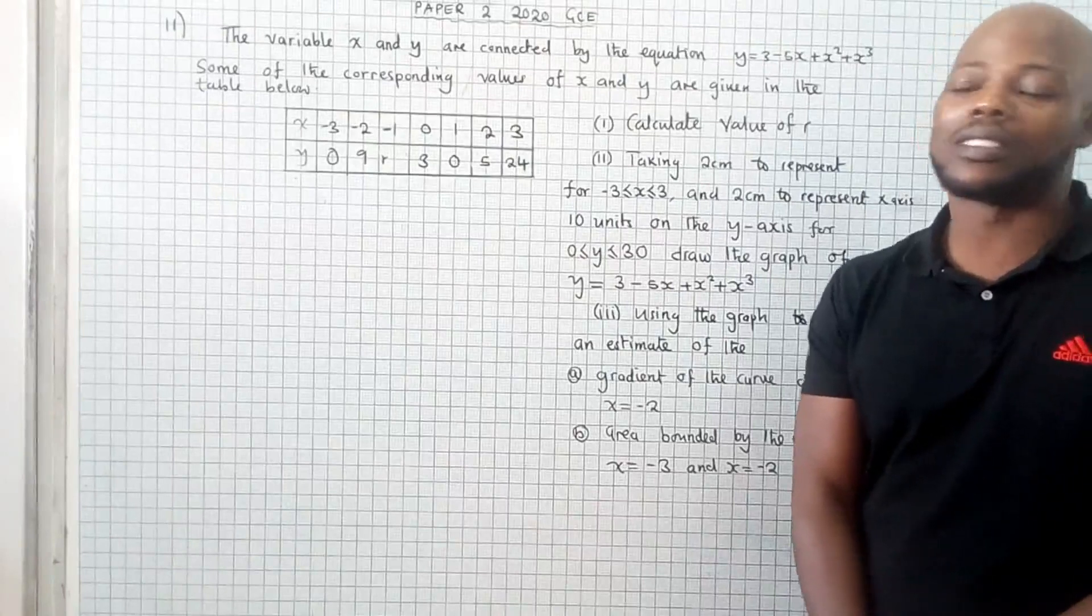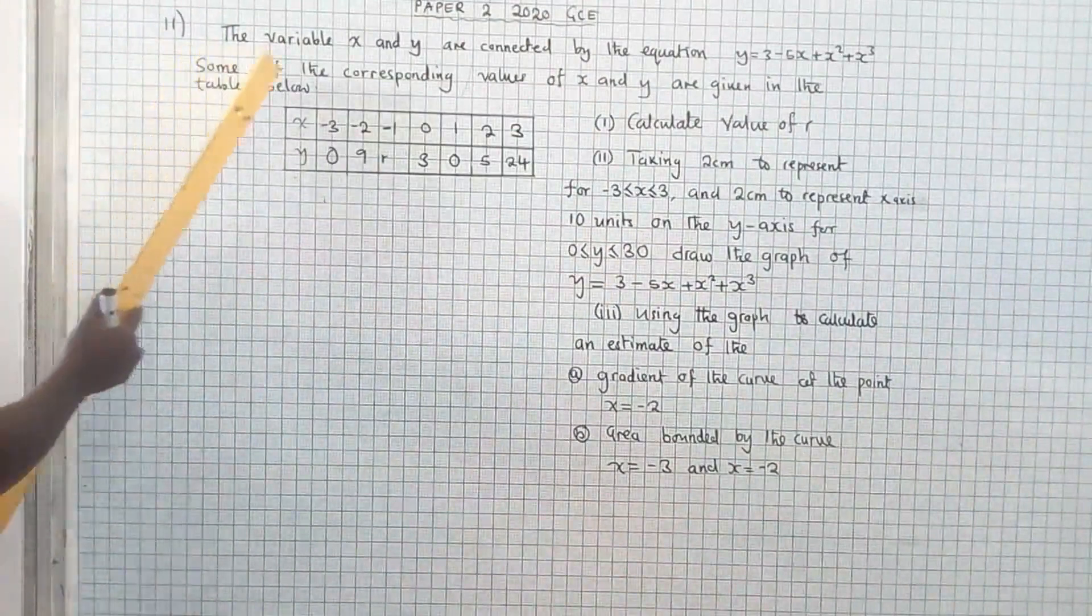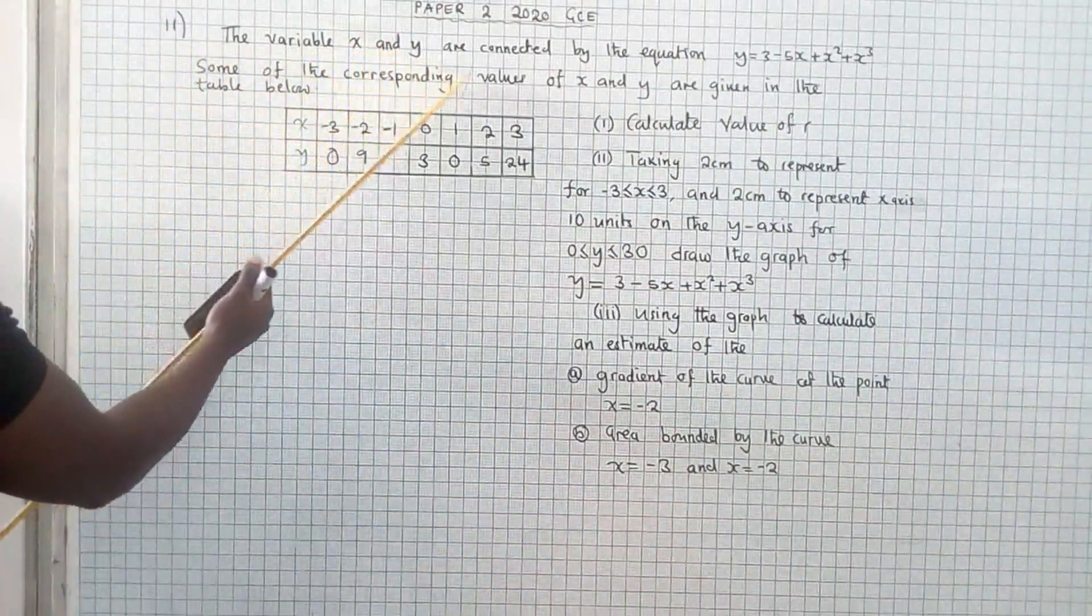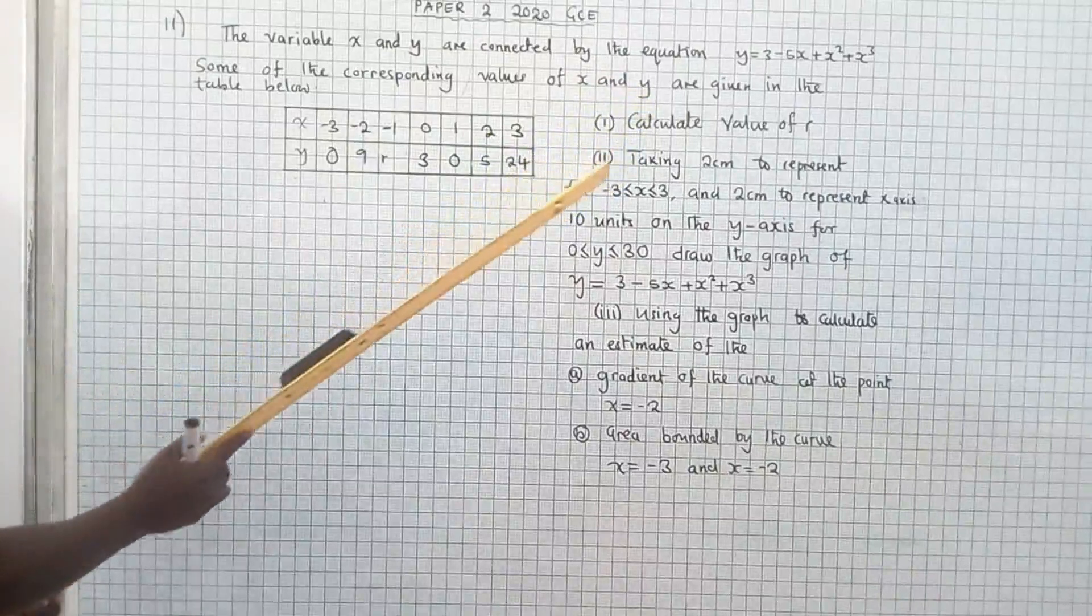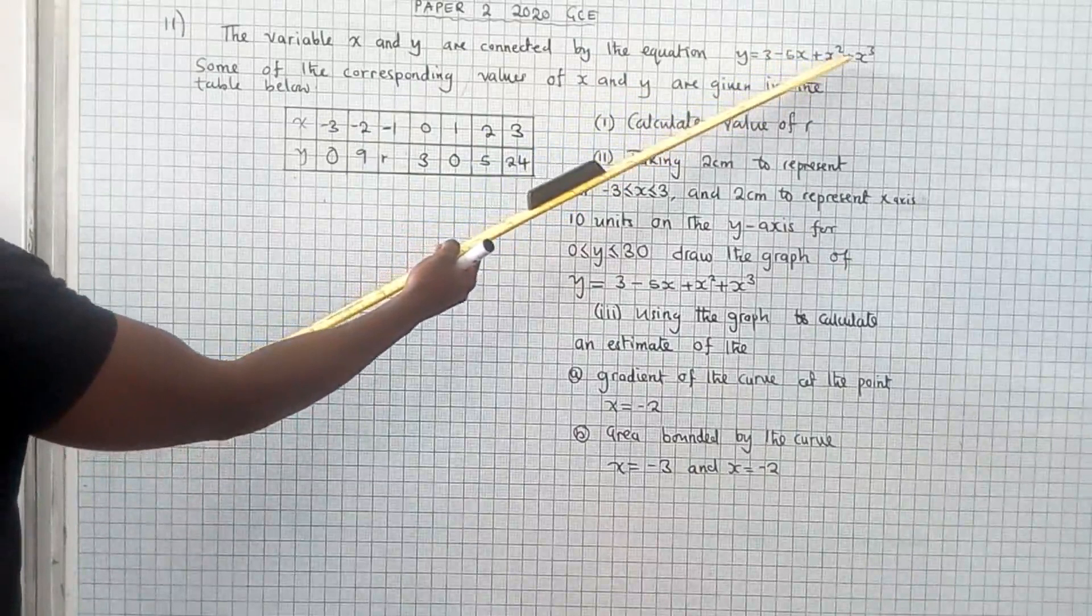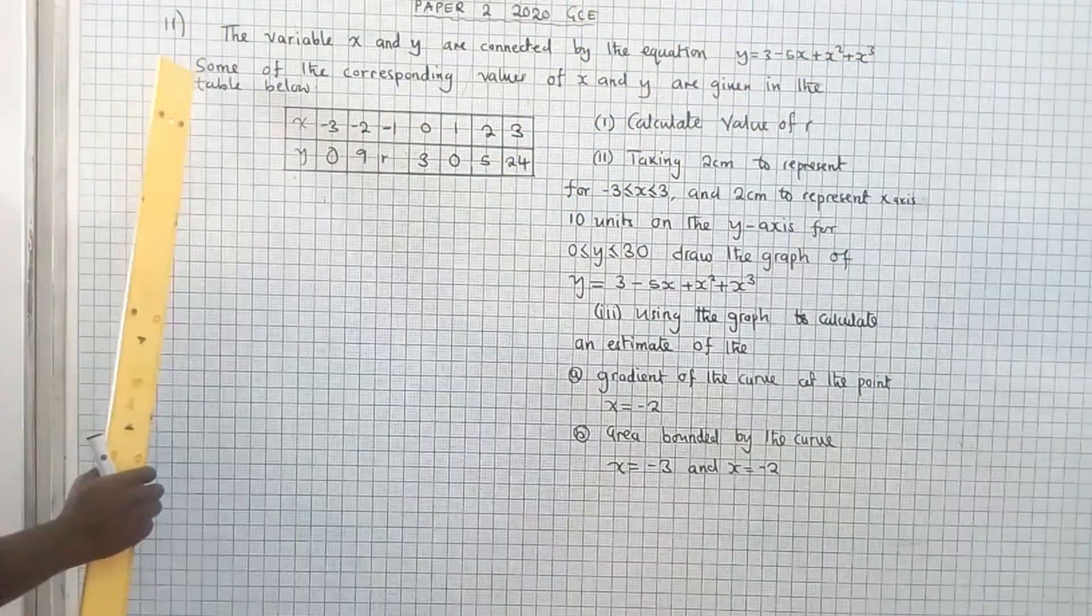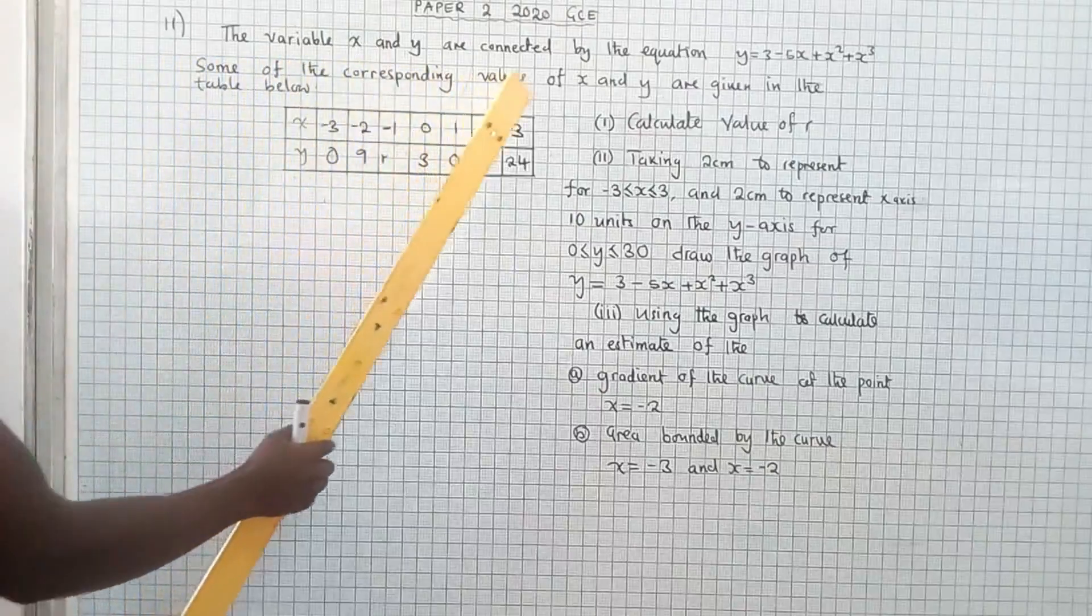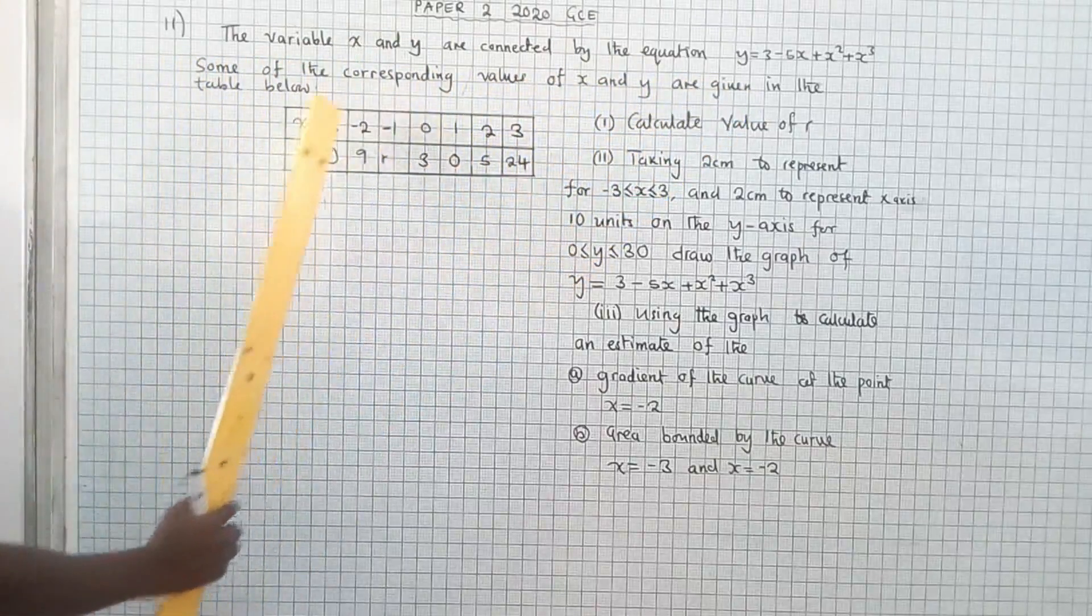This question came in 20GC1. The question is, the variables x and y are computed by the equation y is equal to 3 minus 5x plus x squared plus x power 3. Some of the corresponding values of x and y are given in the table below.